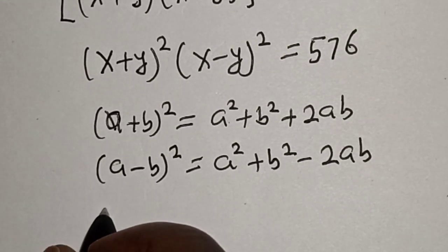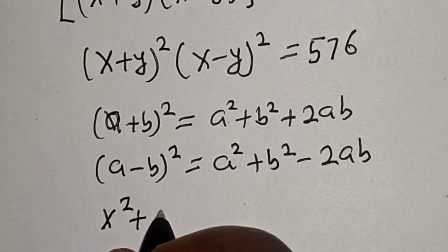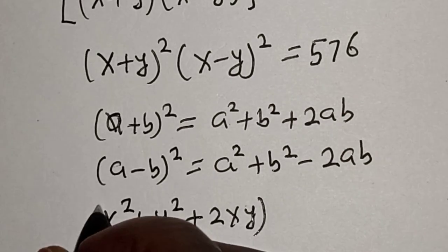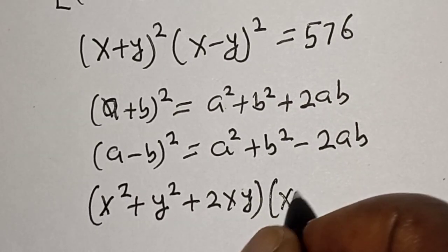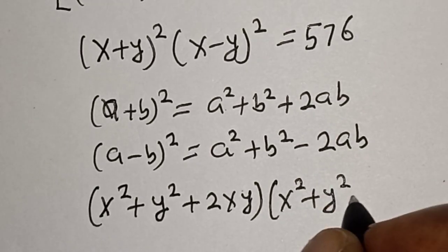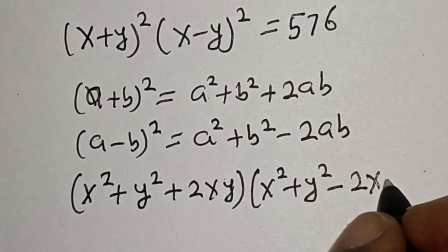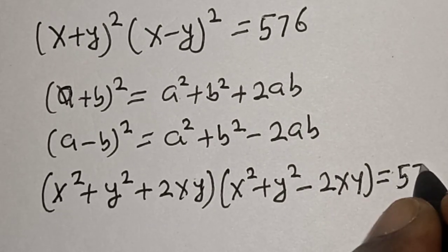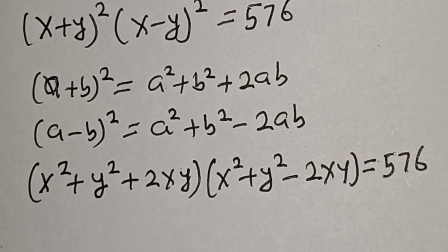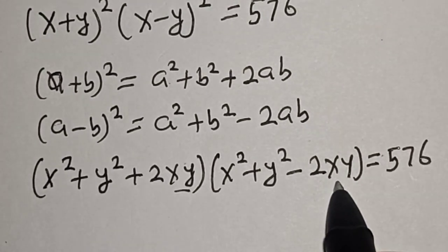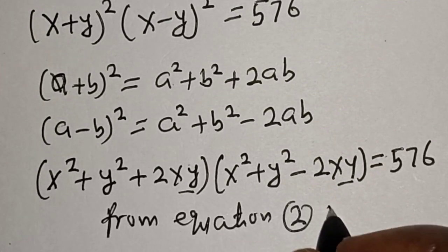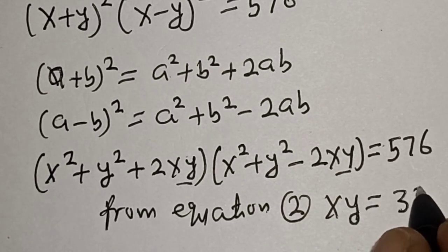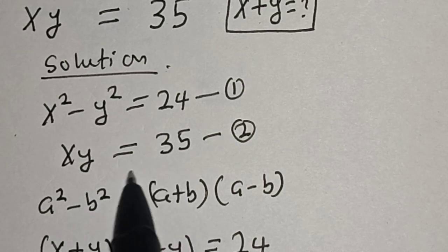Now let's substitute into this equation. We have (x squared plus y squared plus 2xy)(x squared plus y squared minus 2xy) is equal to 576. Now, xy appears in both factors, and from equation two, xy is equal to 35.